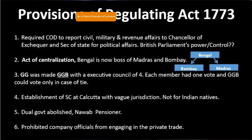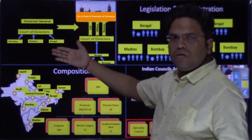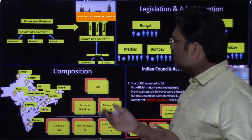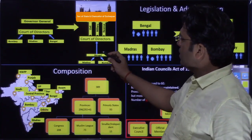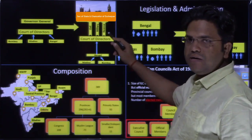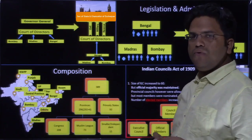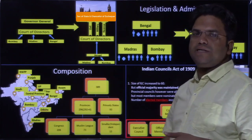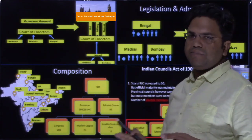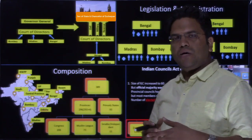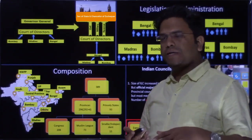So I can guarantee that when you read in textual format — for example, earlier the Court of Directors used to receive reports from three entities. Later, the Governor General of Bengal was made the head, and then only the Governor General of Bengal would report to the Court of Directors, who would then report civil, military, and revenue affairs to the British Parliament. When you read in this way, your retention improves significantly.